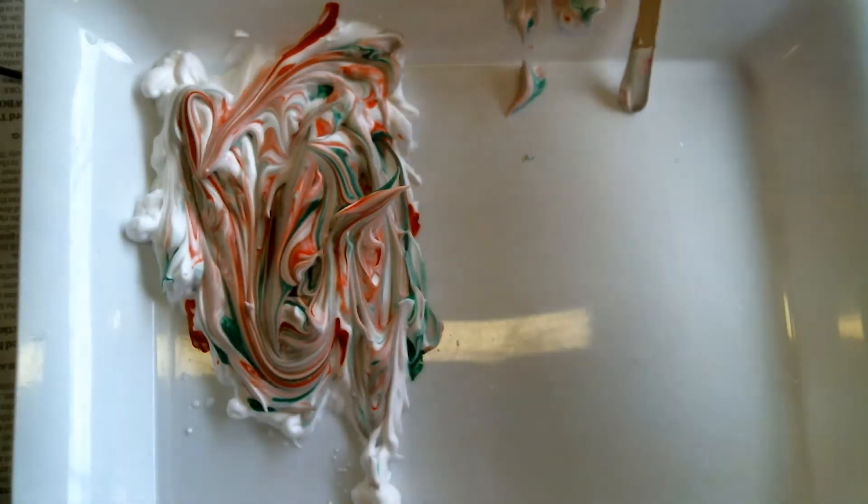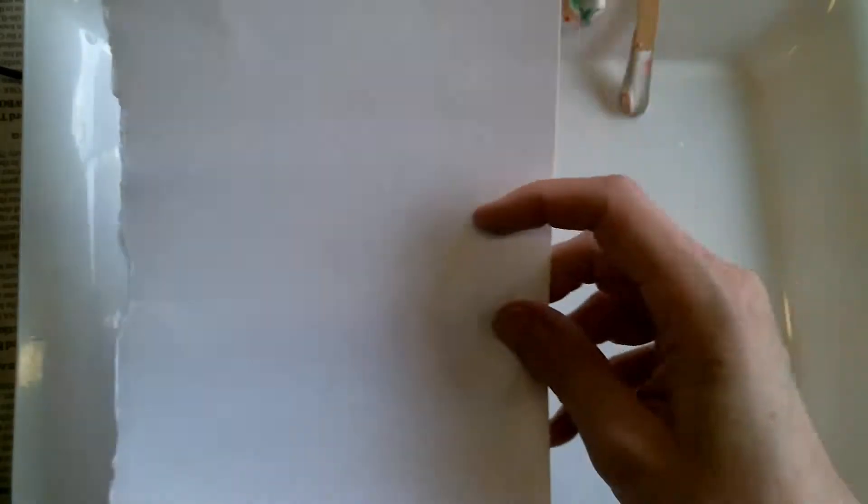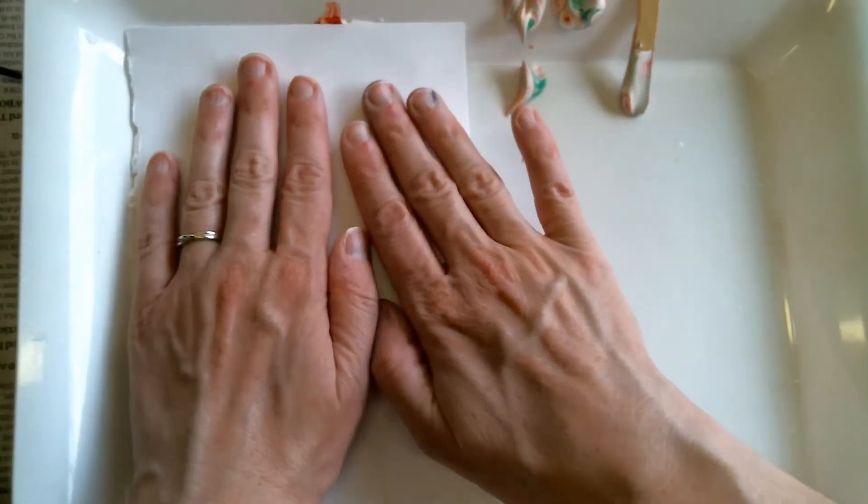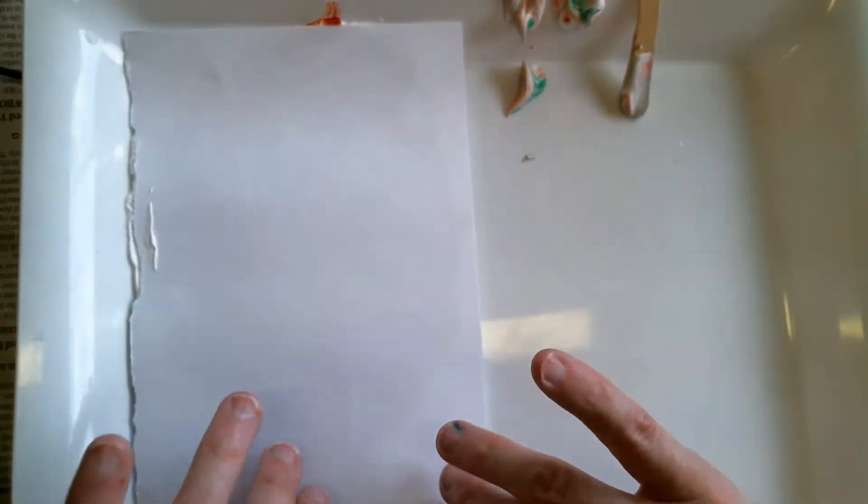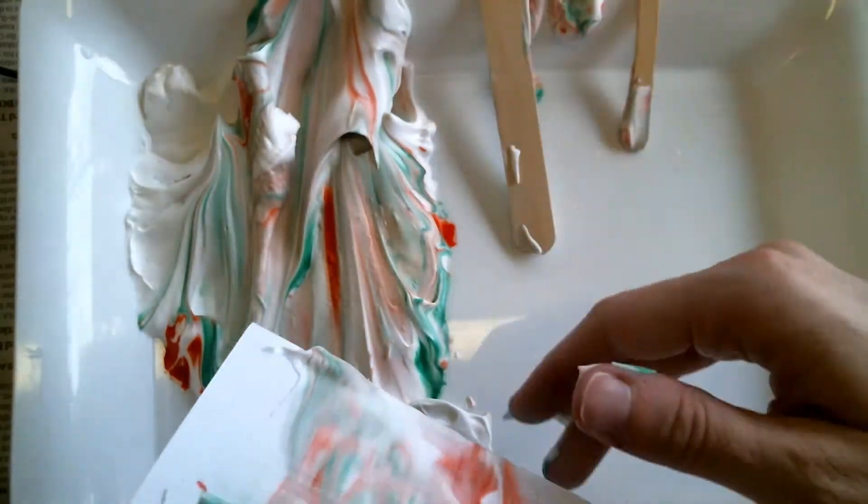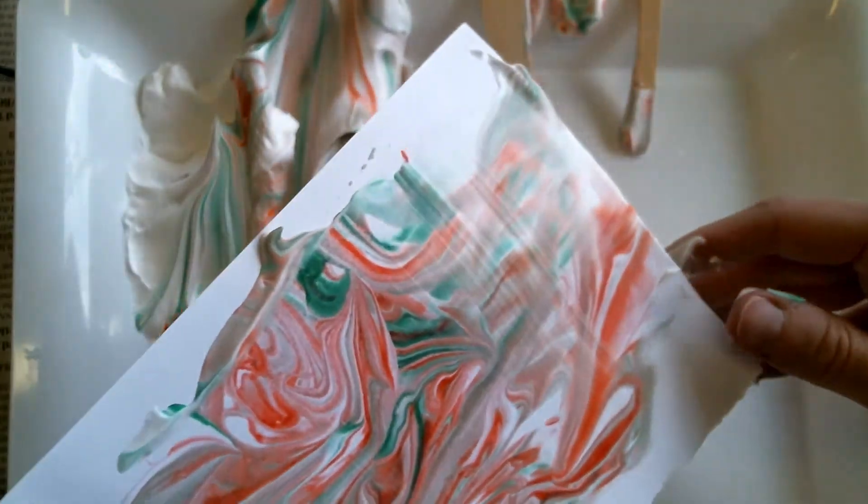Okay so once I have that I'm going to take my piece of paper and just press it down into my shaving cream. Not too hard but make sure it's all the way down in and nice and even. You don't want to move it around. You just want to press it straight down in and I'm going to pull it up and see how it's nice and covered in shaving cream. I want to scrape that off. I don't really want to end up with shaving cream on my artwork. That's just how I got the pretty colors on there. And there you go. You can see my beautiful reds and greens and everything.